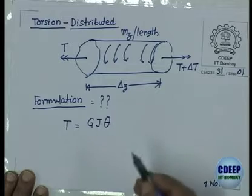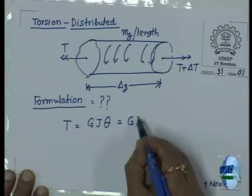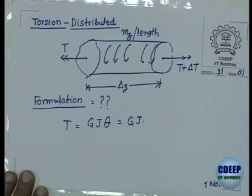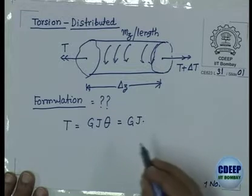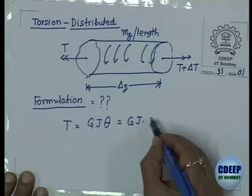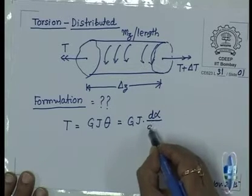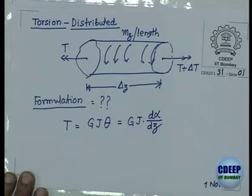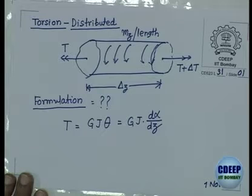Theta is the angle of twist per unit length. If the angle of twist is alpha, then theta is d(alpha)/dz — per unit length. So alpha is the angle of twist, and theta is replaced by d(alpha)/dz.